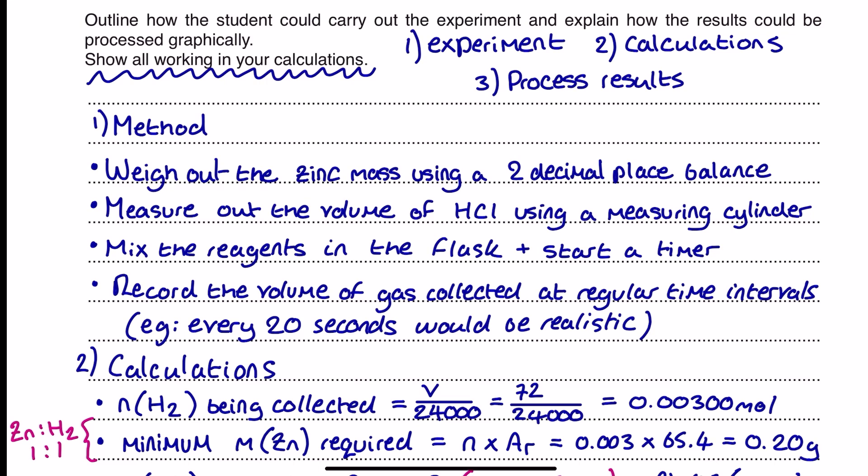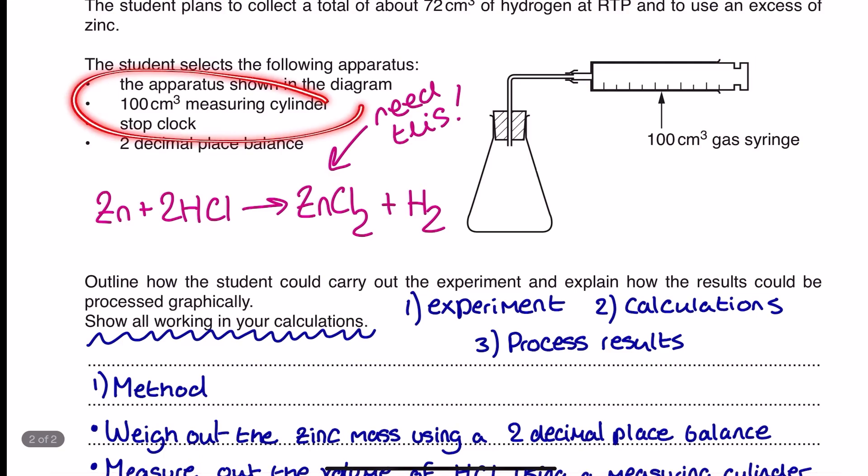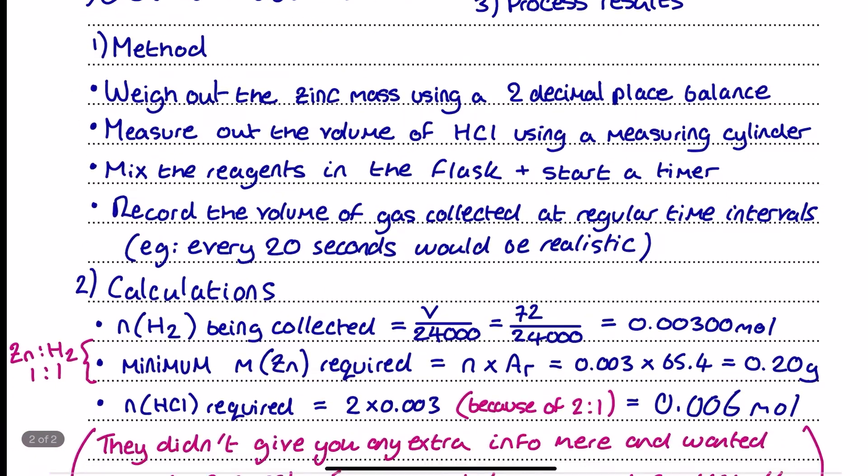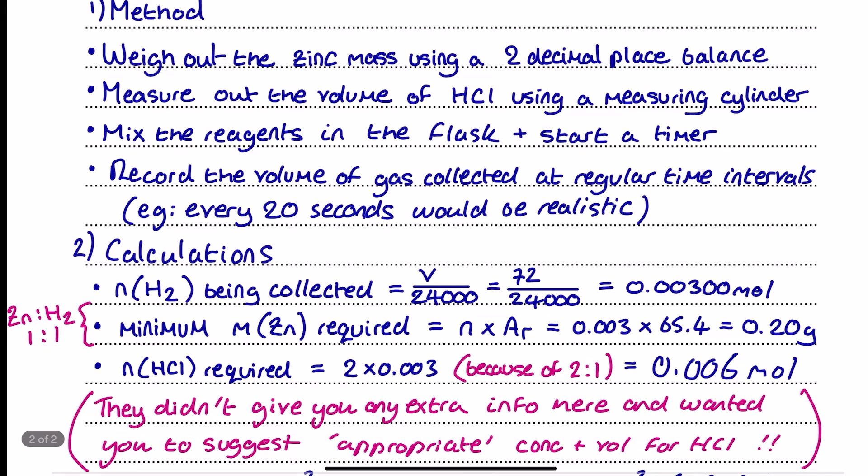So first off for my method, I'm going to weigh out the zinc mass using a two decimal place balance, and I'm going to go into the details of the mass for that shortly. But right now, I'm concentrating on just giving a general descriptor with some finer details of how I would conduct this procedure. I'm going to measure out the volume of the HCl using the measuring cylinder that I've been provided with. Now, notice it is a 100 centimetre cubed measuring cylinder, so that does put a limit on things when we get to the calculation a little later on. So I will come back to that.